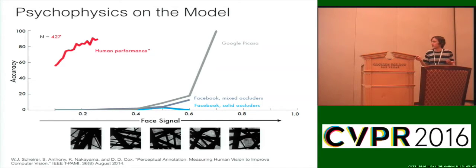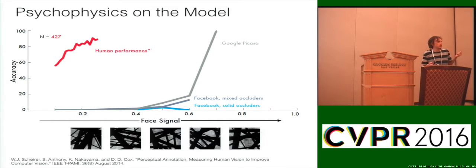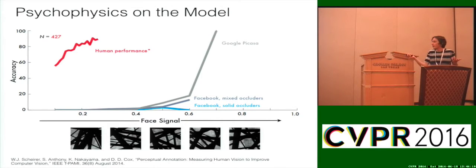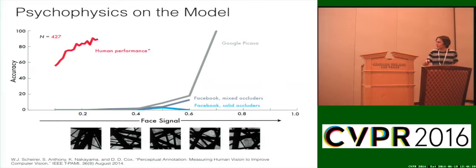You can right away see where a particular model starts to fail and in what regime it actually works well. This is an example of psychometric curves for face detection where we've looked at Google, Picasa, and Facebook. Human performance is superior to machine performance for face detection — somewhat surprising, because your phone can do this and it looks like it works really well. But many models are tuned on training data meant for selfie-style poses and not highly occluded faces, which we as humans need to detect.